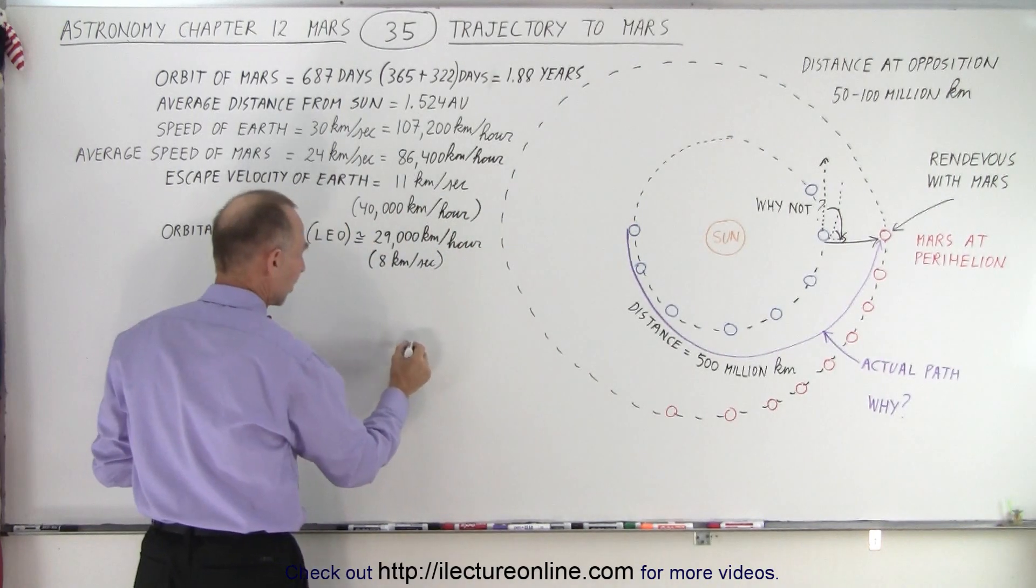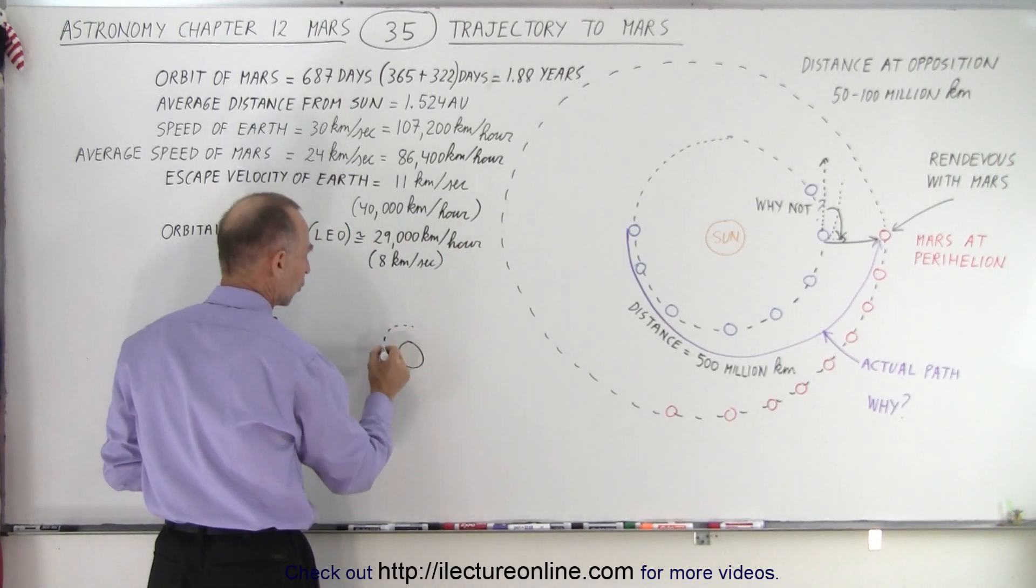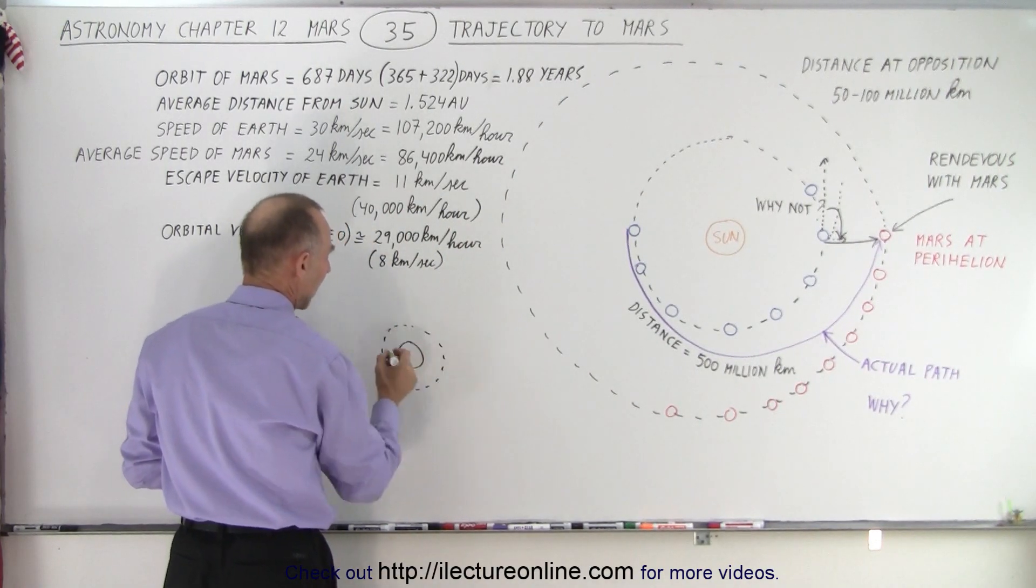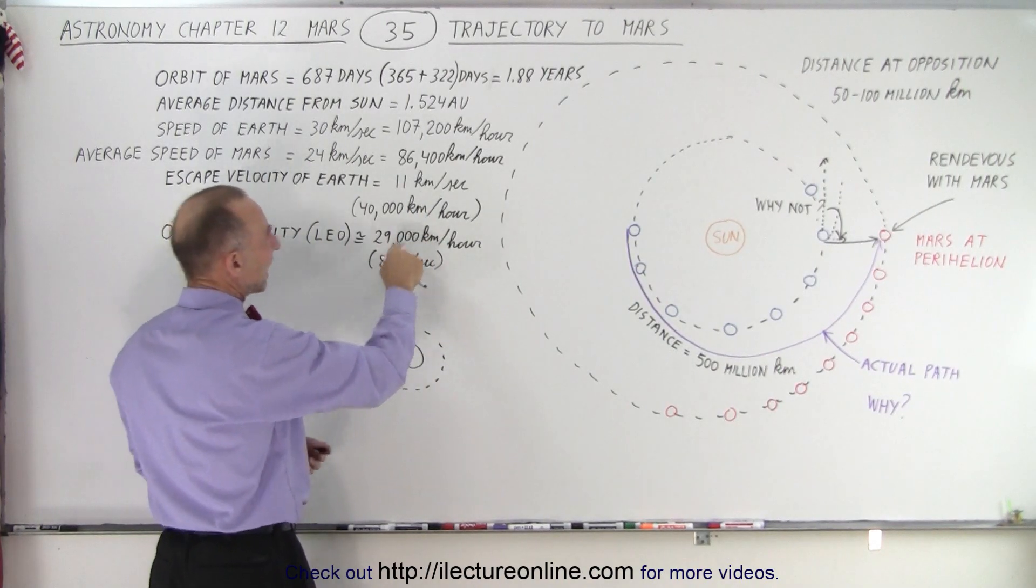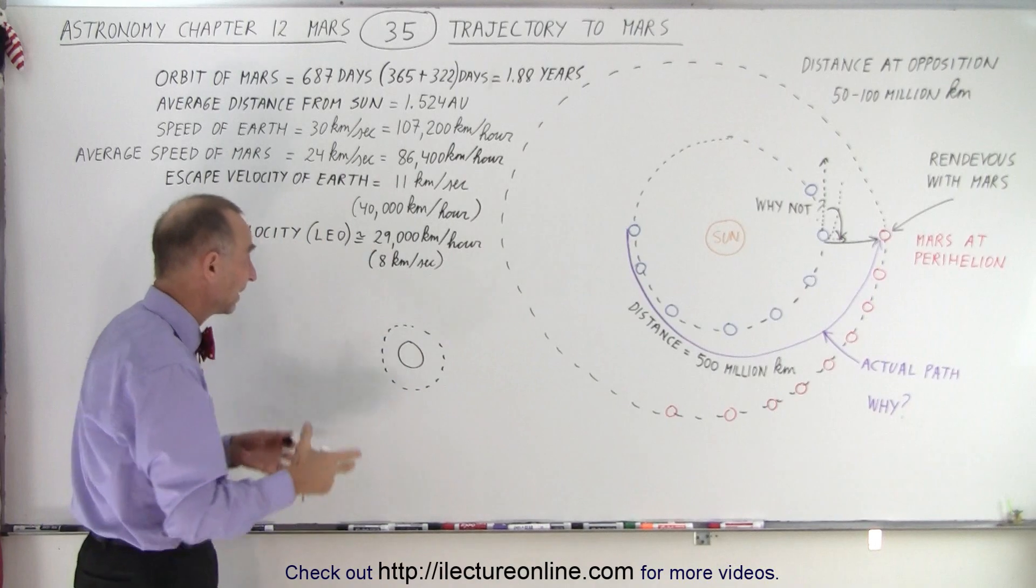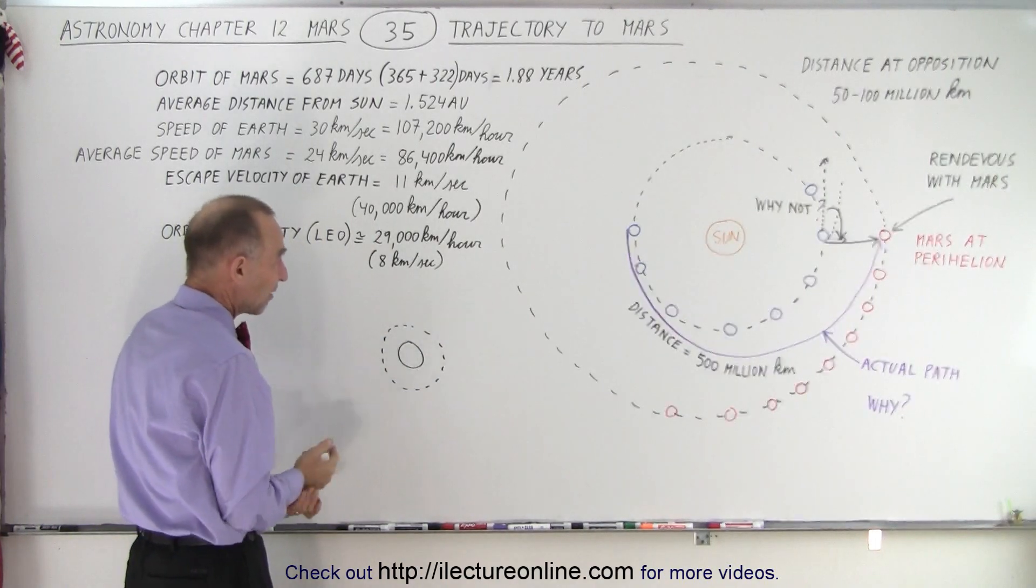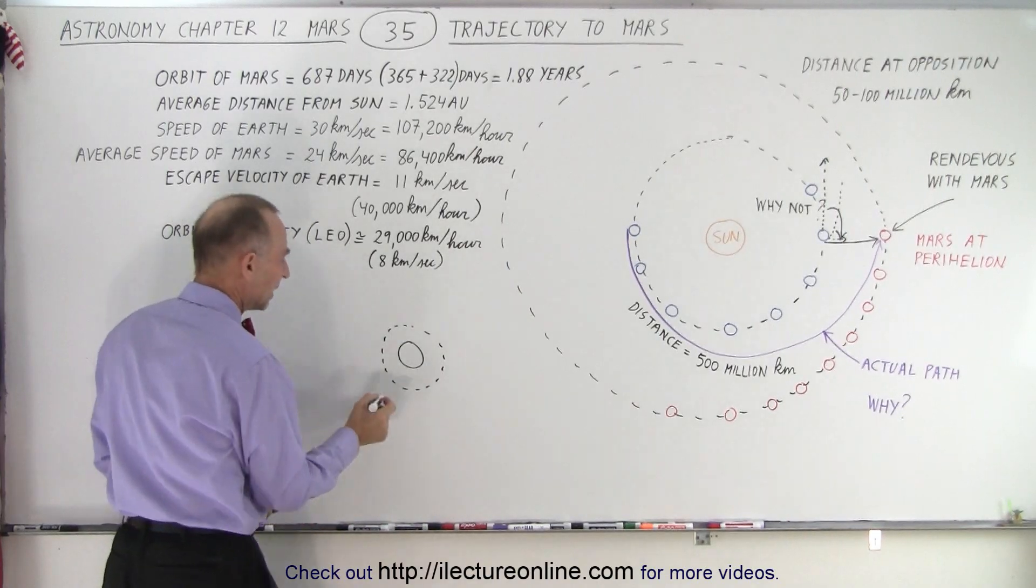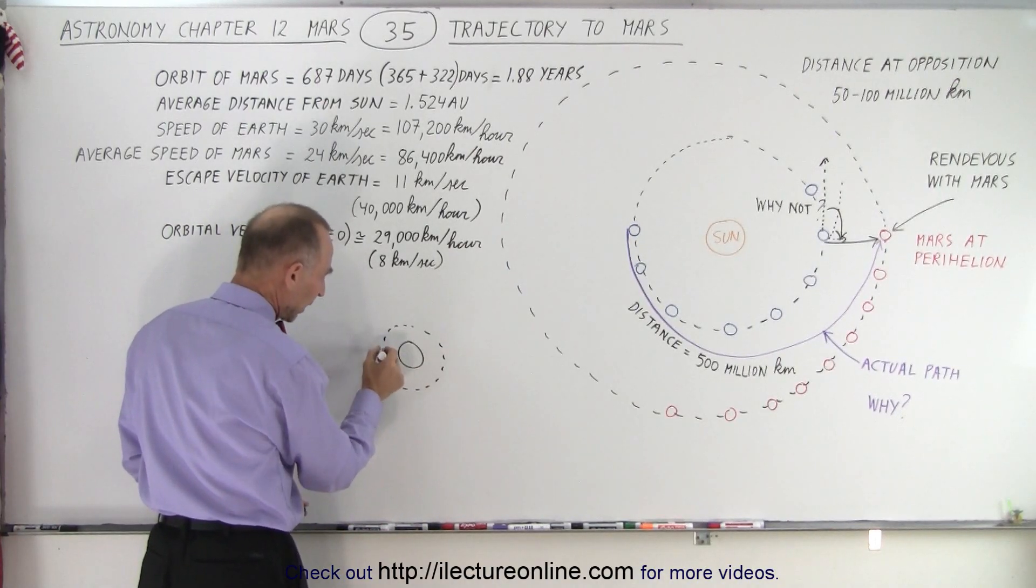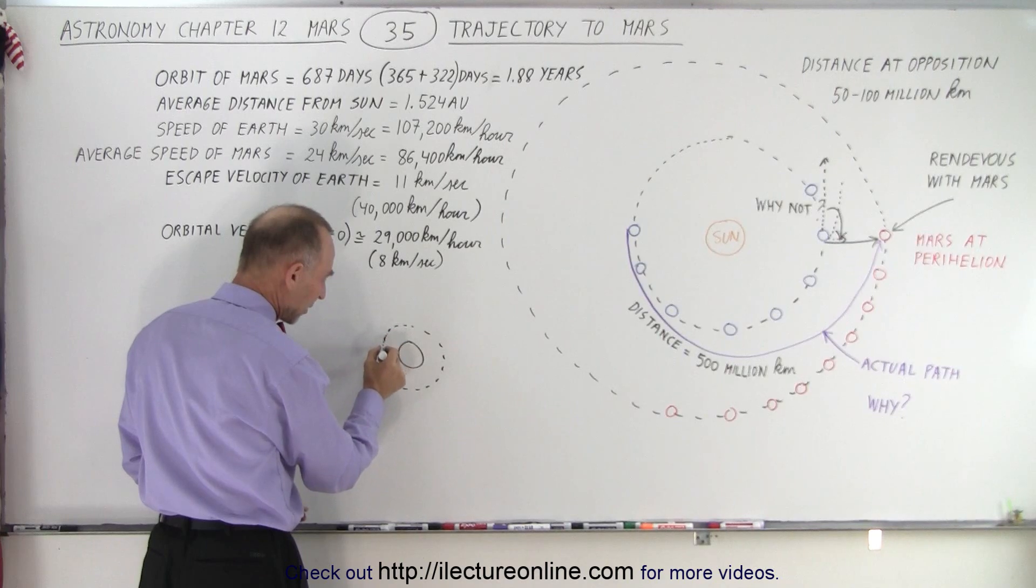Let's say here's the Earth, and here's Earth's orbit, like this, and we're going around the Earth at about 29,000 kilometers per hour, about 8 kilometers per second, about 5 miles per second, 18,000 miles per hour. And then you want to leave Earth's orbit going in this direction, so when you come around here, then you turn on the afterburners.